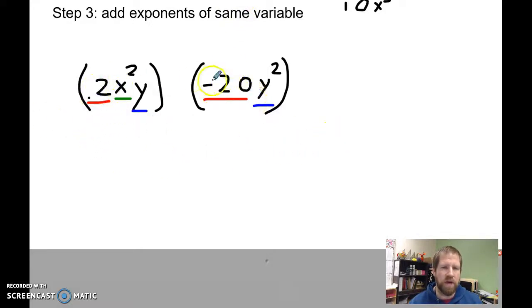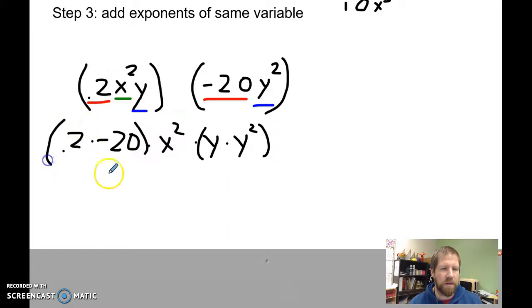So I've got 0.2 times negative 20, times x squared, and then times y times y squared. And again, I can throw parentheses around these if I want to make sure I can keep them clear. But then I'm just going to multiply these values, add my exponents, and put it all back together.